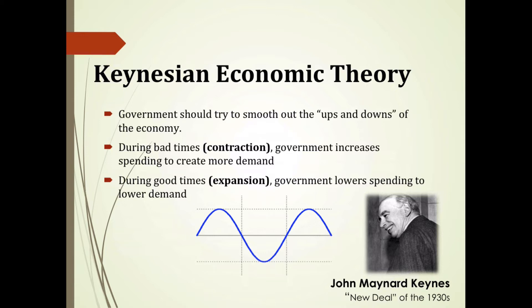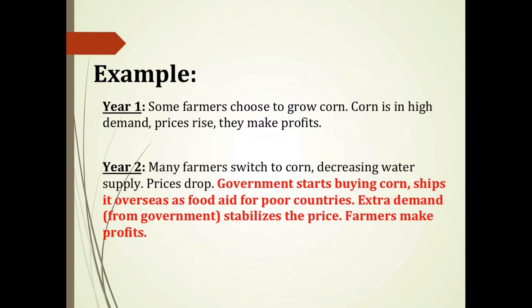Returning to our farmer example under Keynes' theory: in year one, farmers grow corn, demand is high, prices rise, and profits are made. In year two, many farmers switch to corn, causing a water supply decrease and lower prices. The market is failing some producers. Under Keynesian theory, the government would start buying corn — possibly shipping it overseas as food aid for poorer countries — so the extra government demand helps stabilize the price of corn and the majority of farmers make profits.